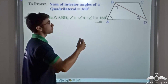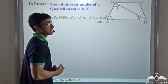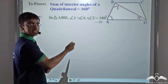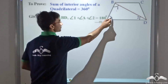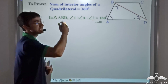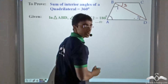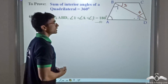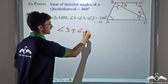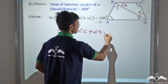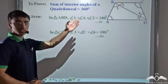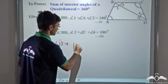In triangle ABD I have marked two angles: angle one and angle two. Since the sum of interior angles of a triangle is equal to 180 degrees, I can write: angle one + angle A + angle two = 180 degrees. Likewise, in triangle BCD I mark angle three and angle four, and similarly: angle three + angle C + angle four = 180 degrees. So I now have two equations — equation one and equation two.